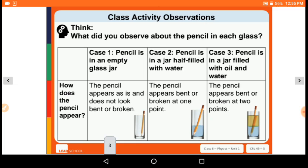What did you observe about the pencil in each glass? In case 1, pencil is in an empty glass jar. Next, pencil is in a jar half filled with water. And the last one, pencil is in a jar filled with oil and water.